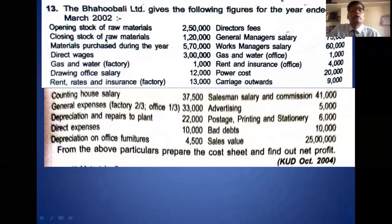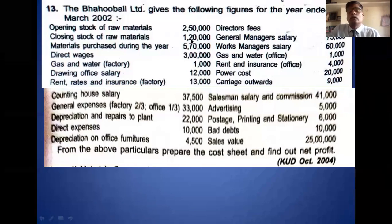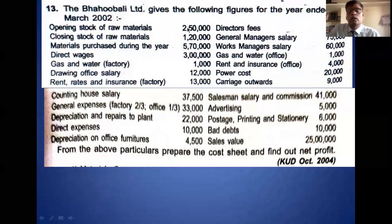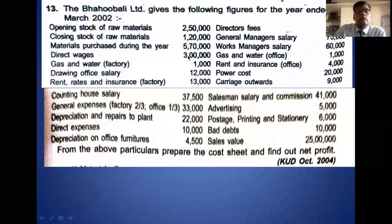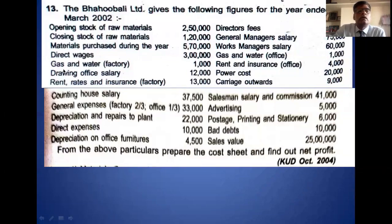Opening stock of raw material, closing stock of raw material, purchase of raw material — these are related with raw material consumed, related with direct material. Add purchase, then deduct the closing stock of raw material and you will get the raw material consumed. Direct wages is 3 lakh rupees — this is the second item in the prime cost.